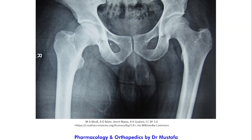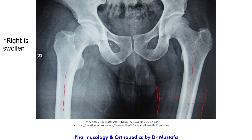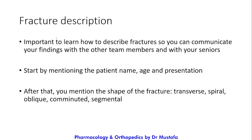This is another example: a patient with an infection of the right femoral bone. The left femoral bone is normal, and you can see the limits of the soft tissue on both sides. On the right side, the soft tissue is noticeably larger, indicating swelling. Now let's talk about fracture description, which is very important.